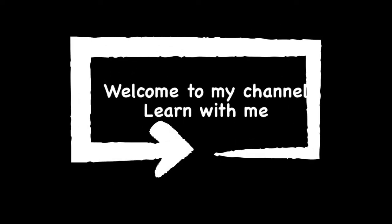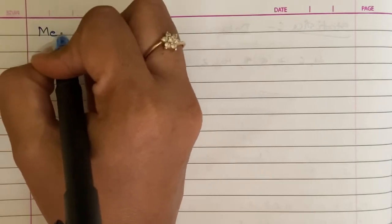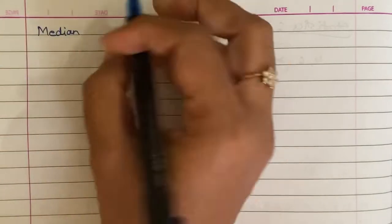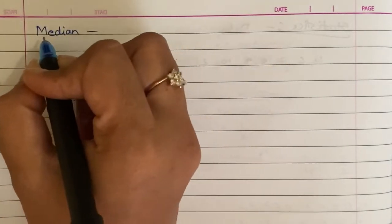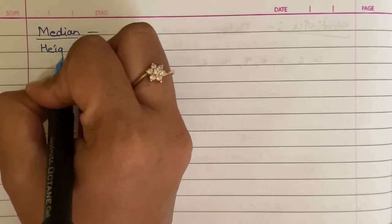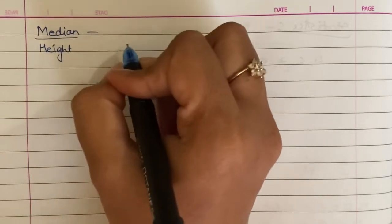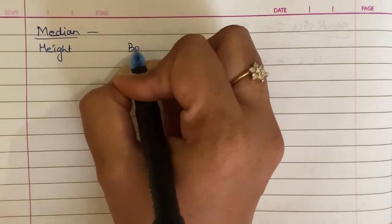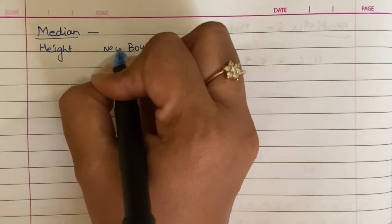Hello friends, welcome to my channel Learn With Me. In this video, I will find a frequency distribution table. First, I will find a frequency distribution table. So this is height. It will be number of boys in a class.